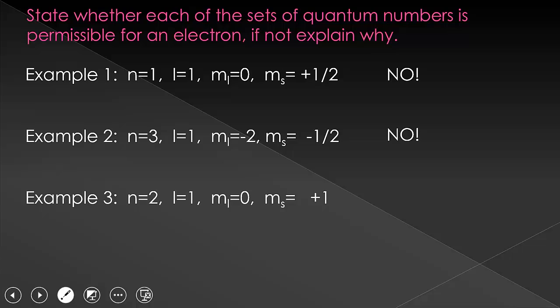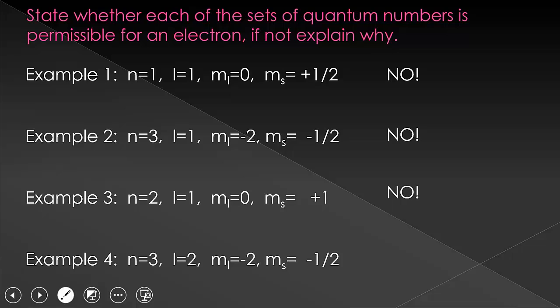Here's our third set. Hopefully you said no for this one. While the N, L, and M sub L are all okay, the M sub S value is equal to plus one, and in our universe that is not allowed. Now our last one. N equals three, which means L is allowed to equal zero, one, or two, and so we're fine with the L value. An L value of two allows M sub L to equal negative two up through positive two, so that one's okay. And M sub S is always allowed to equal negative or positive one-half, so that one's okay — and so this set is allowed.